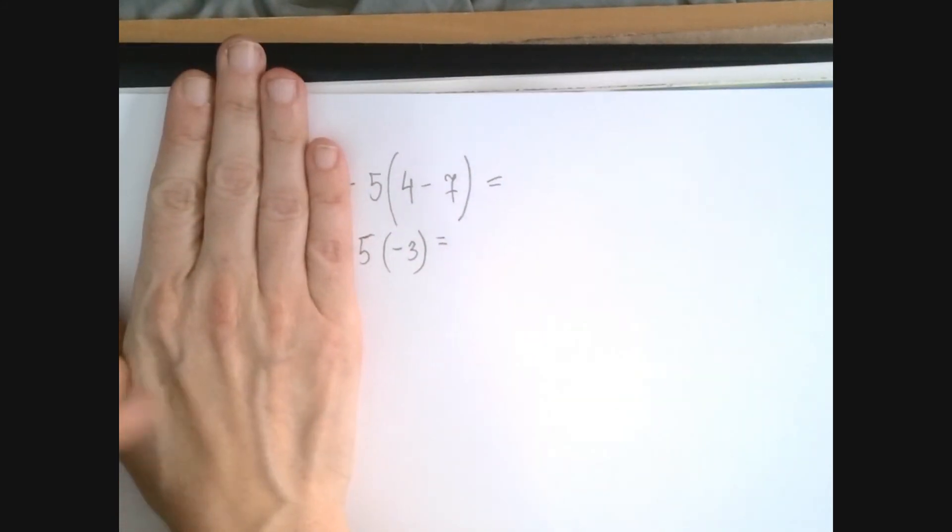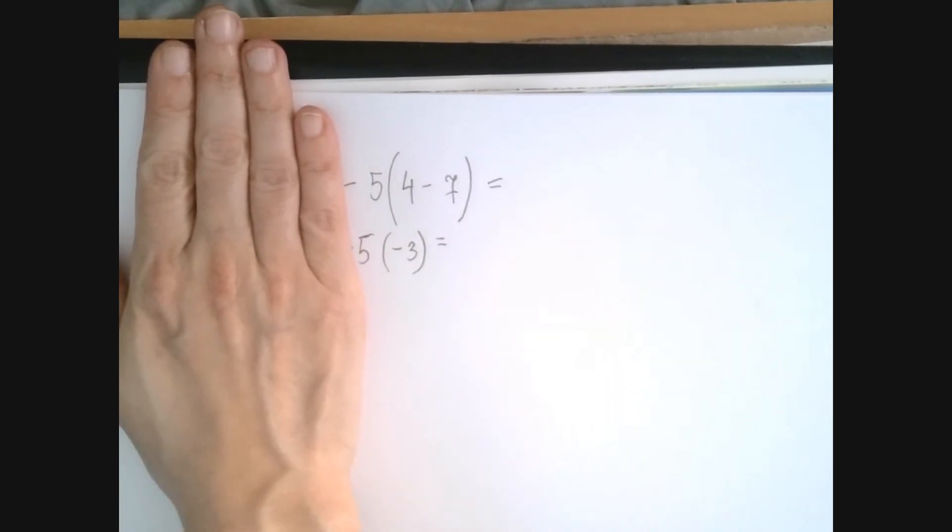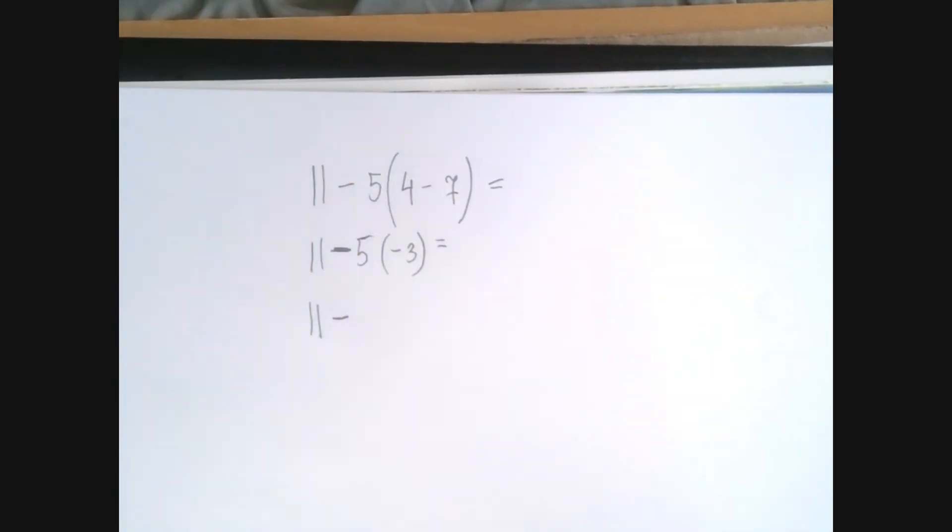So we have 11, and we're going to subtract the result of what multiplication? Well, this one, right? We carry down the negative sign, so we shouldn't include it anymore.